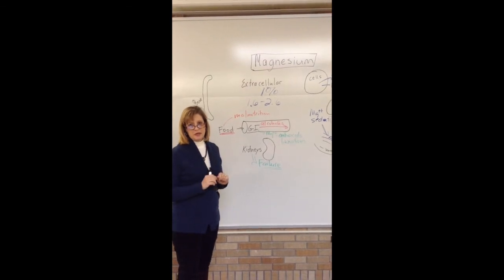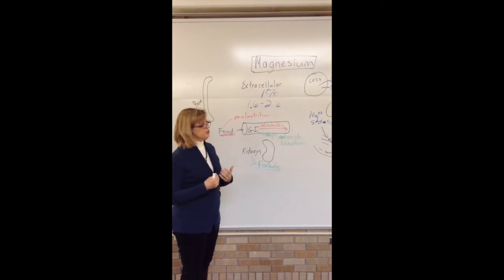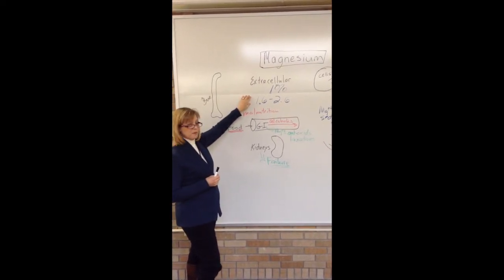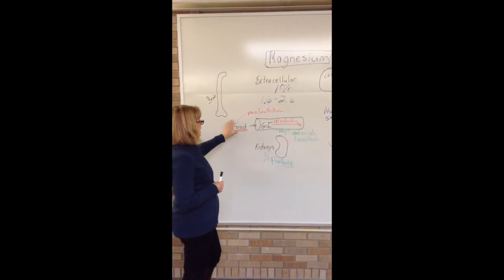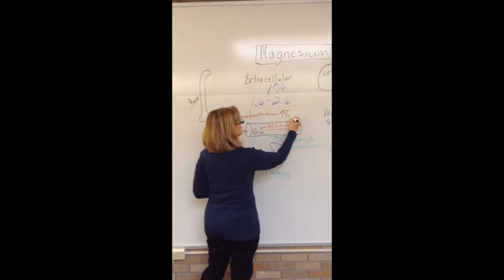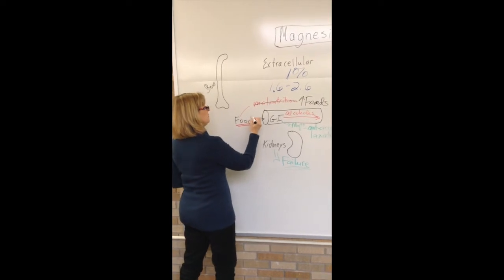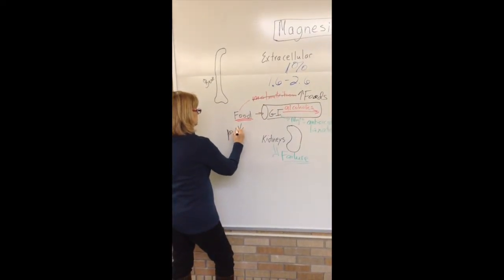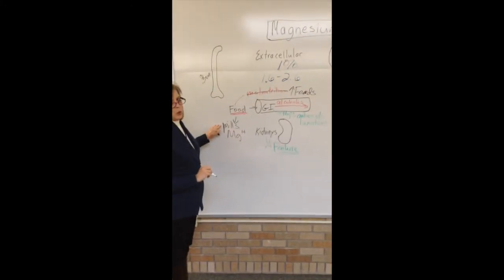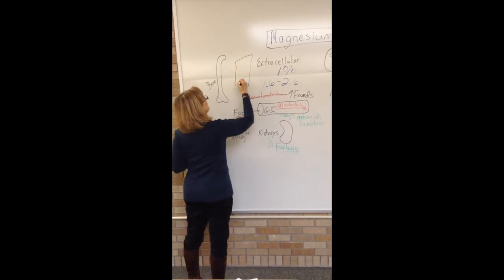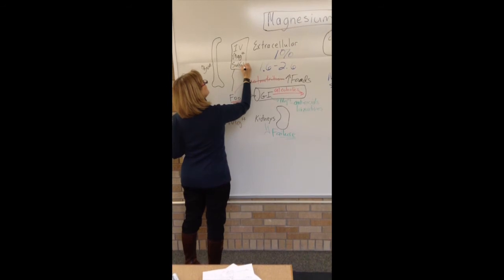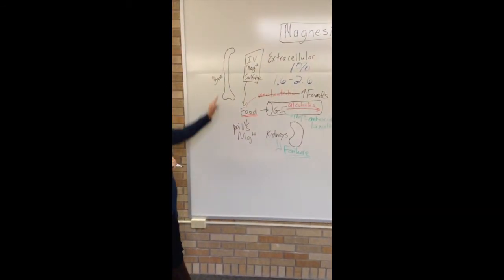How do we treat a patient with problems with magnesium levels? If a patient is below 1.6, we want to make sure we address malnutrition and ensure they're getting foods that contain magnesium. If they need additional help, we can give magnesium supplements in pill form. If they need it more quickly, we can also give it IV — the drug of choice IV is magnesium sulfate. It can also be given IM if needed.